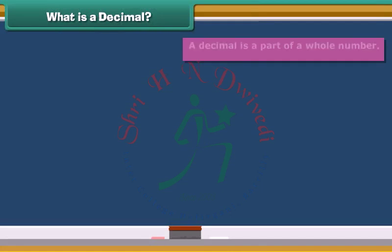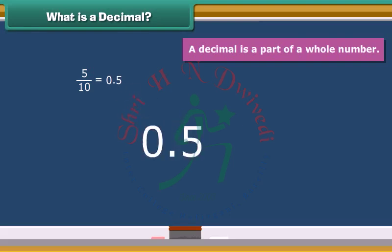Basically, a decimal is a part of a whole number. Look, the fraction 5 by 10 could be written as 0.5. You can easily identify a decimal by looking at the decimal point.